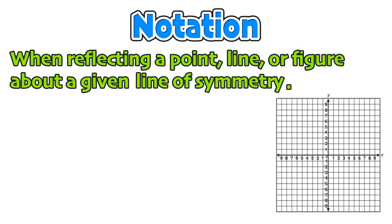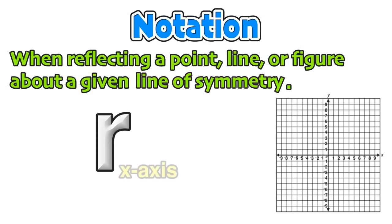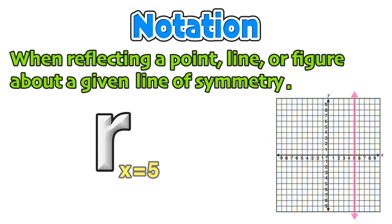When reflecting a point, line, or figure about a given line of symmetry, we use the lowercase r notation. This notation will specify the line of symmetry for which our reflection will occur.